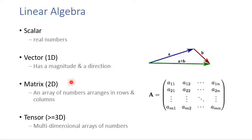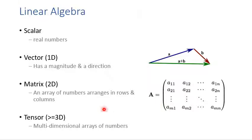The third element is a matrix — a matrix is an array of numbers arranged in rows and columns. A 2D array is a matrix in linear algebra. In practice, we usually have data with more than two dimensions, and data with more than two dimensions is called a tensor. A tensor is a multi-dimensional array of numbers.